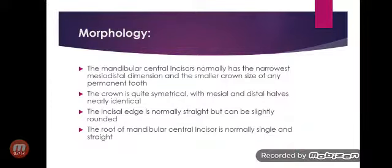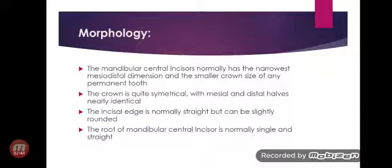Regarding morphology, the mandibular central incisor normally has the narrowest mesiodistal dimension and the smallest crown size of any permanent tooth. The crown is quite symmetrical, with mesial and distal halves nearly identical. The incisal edge is normally straight but can be slightly rounded. The root of the mandibular central incisor is normally single and straight.